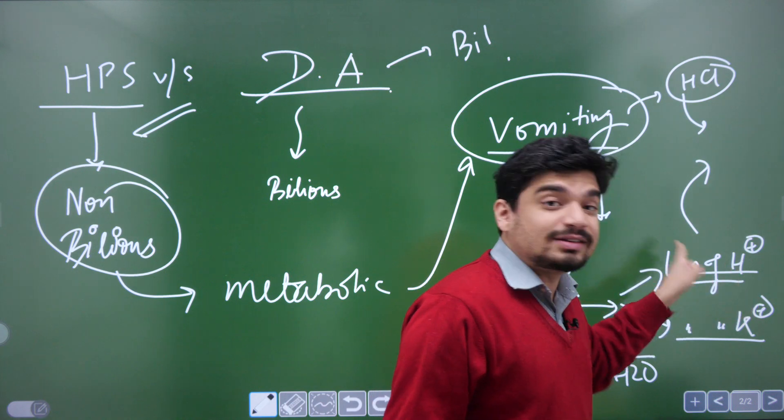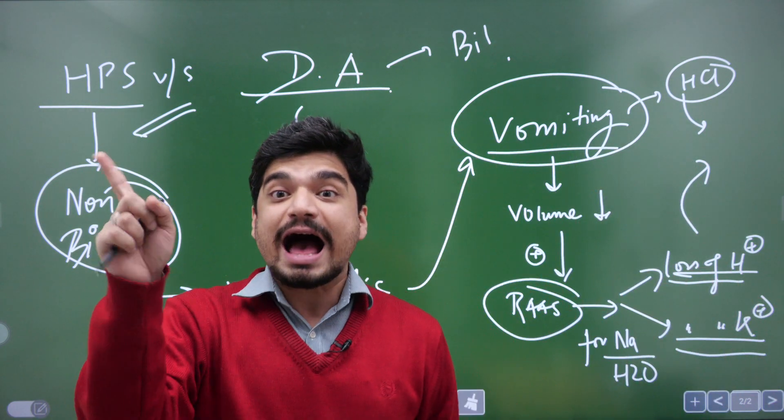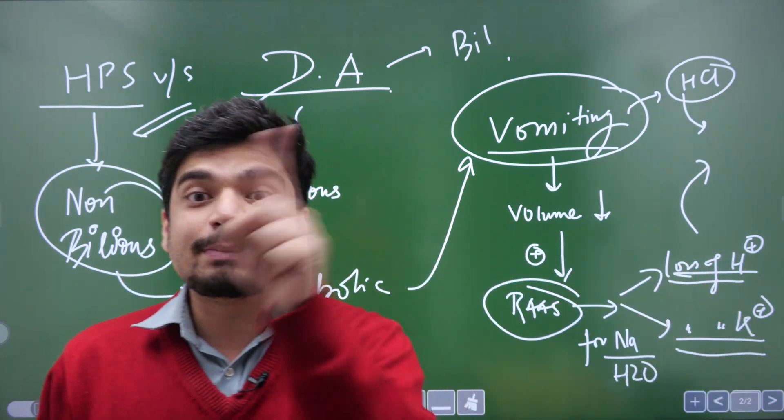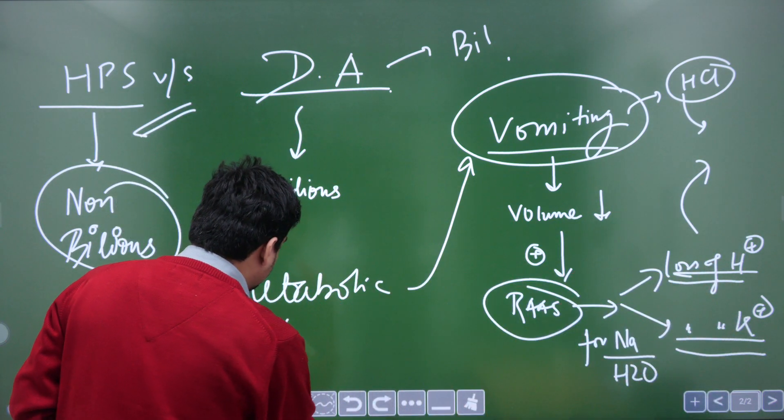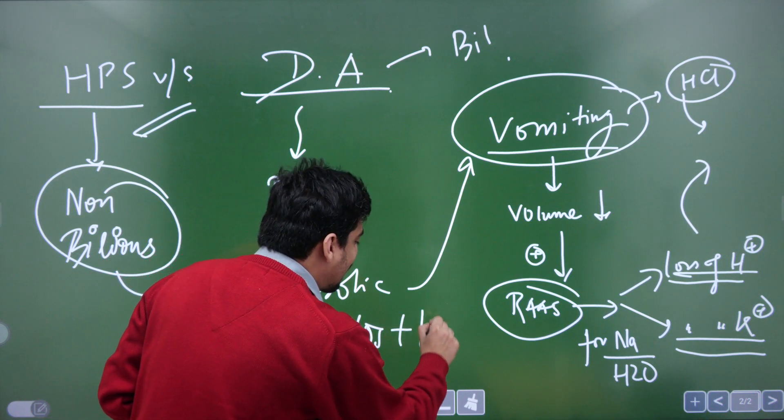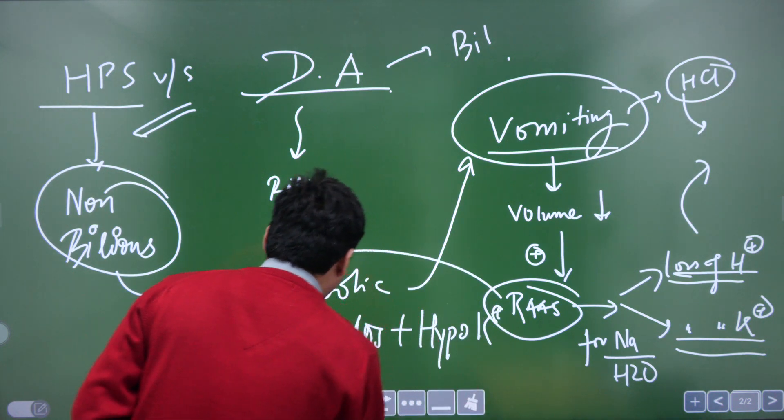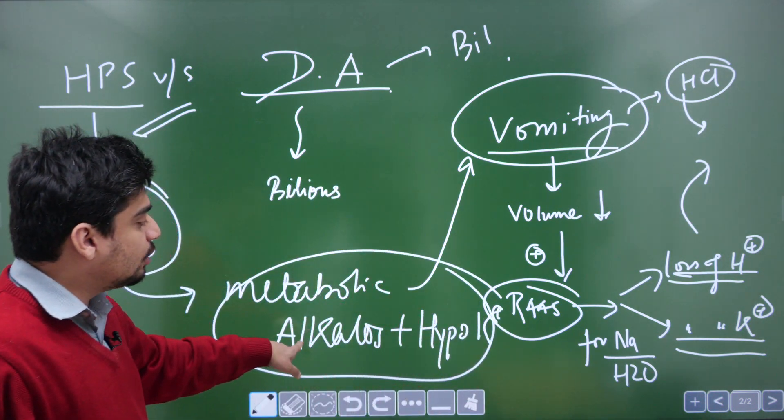So there will be loss of H+ in the urine and loss of K+ in the urine. So there will be hypokalemia and loss of H+ will cause metabolic alkalosis - metabolic alkalosis plus hypokalemia.